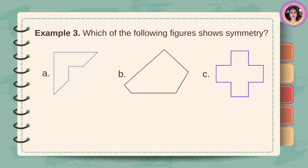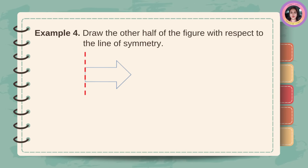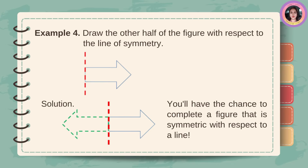Example number 3: which of the following figures shows symmetry? Solution: the symmetrical figures are A and Z, while B is asymmetrical. Example number 4: draw the other half of the figure with respect to the line of symmetry. Solution: you'll have the chance to complete a figure that is symmetric with respect to a line.